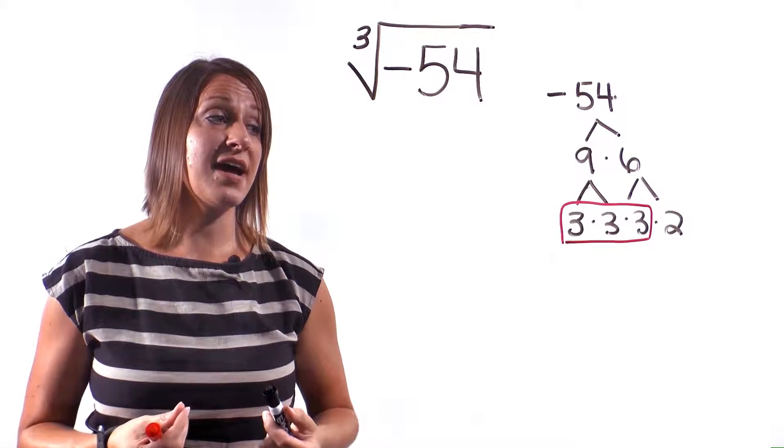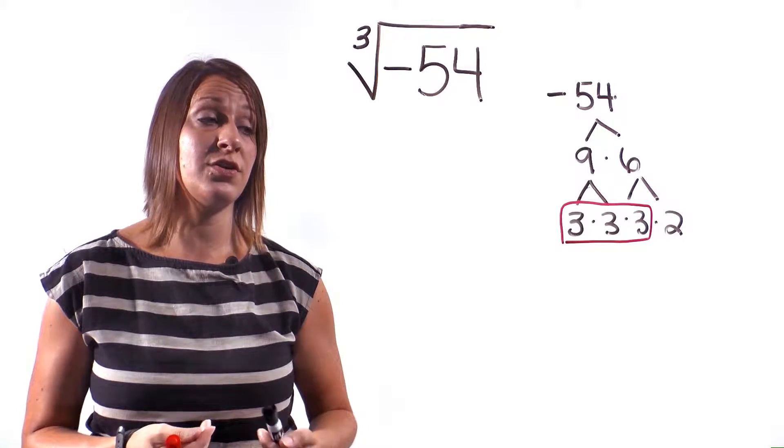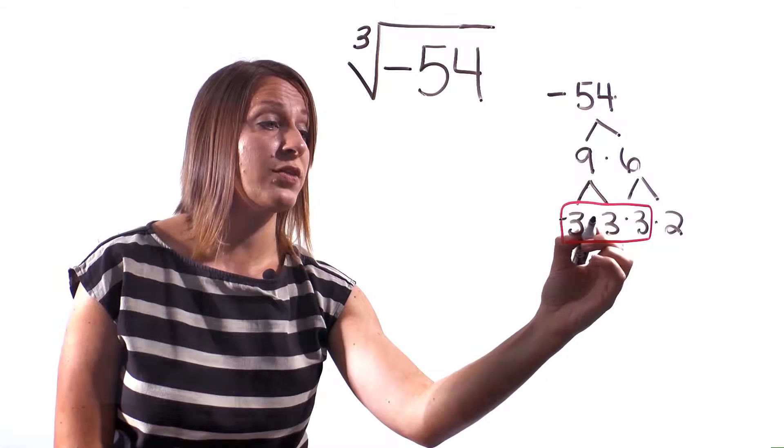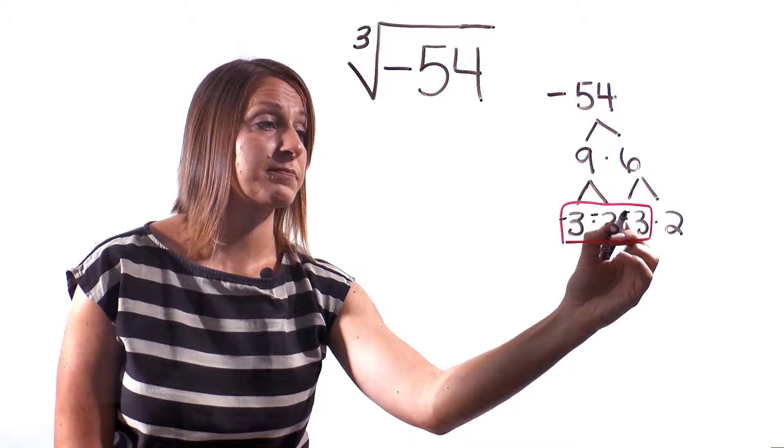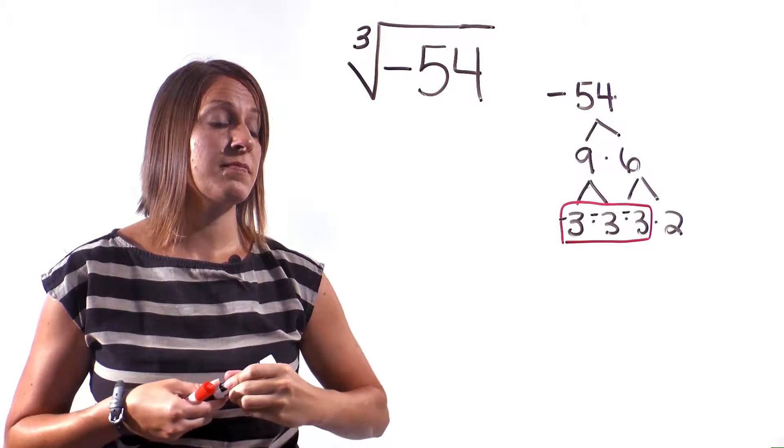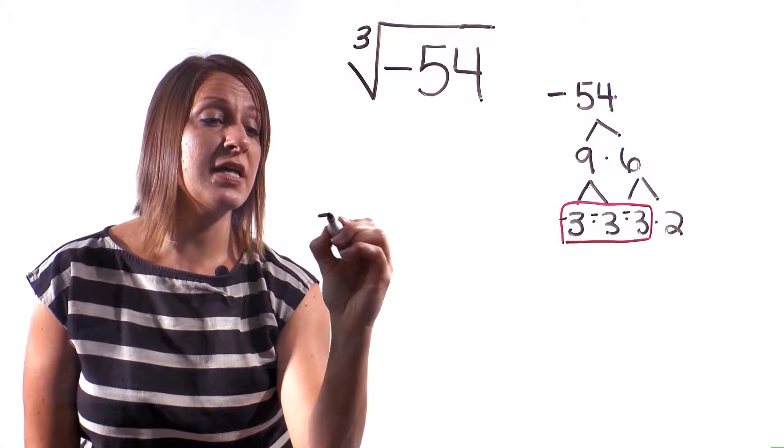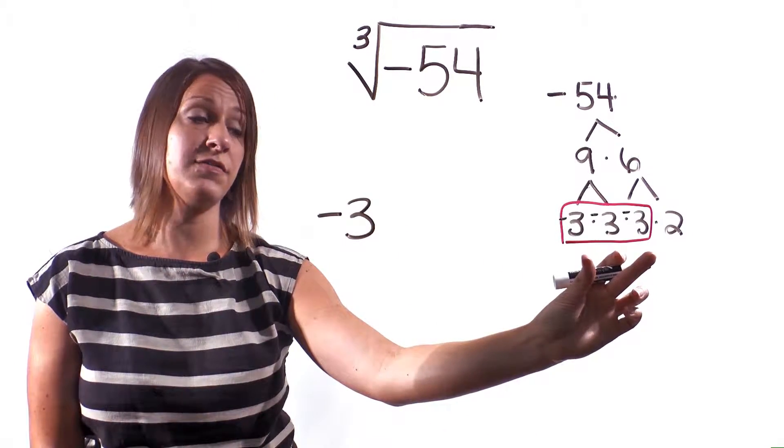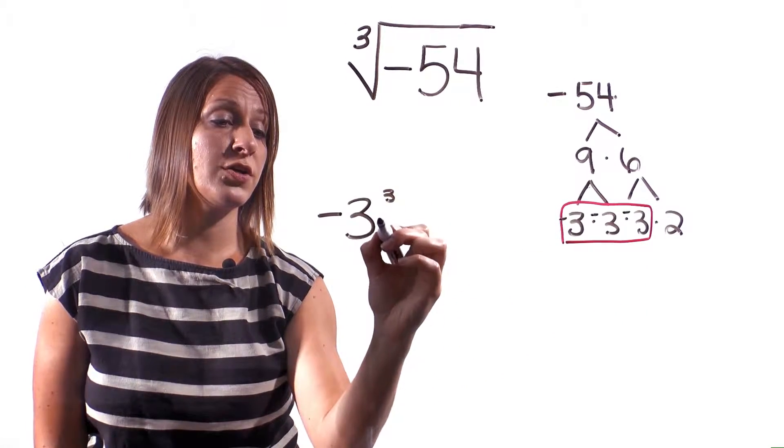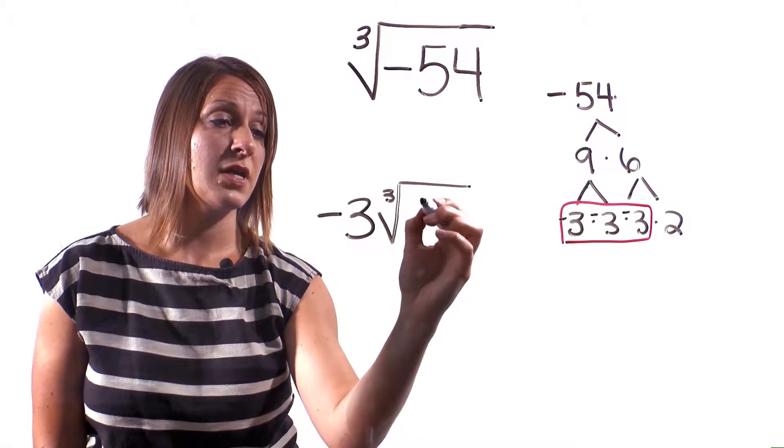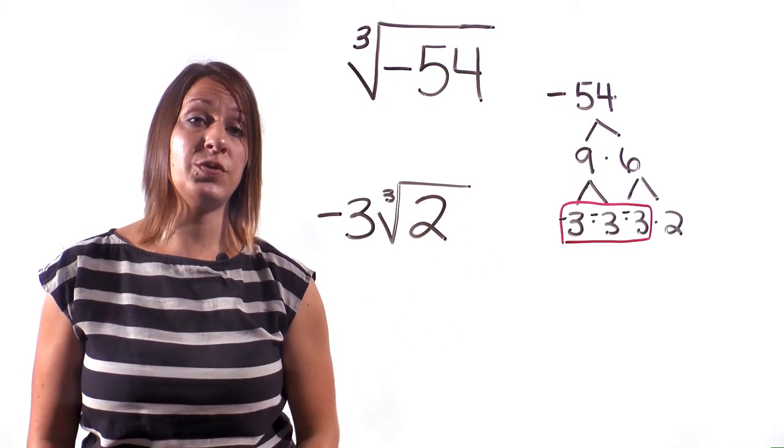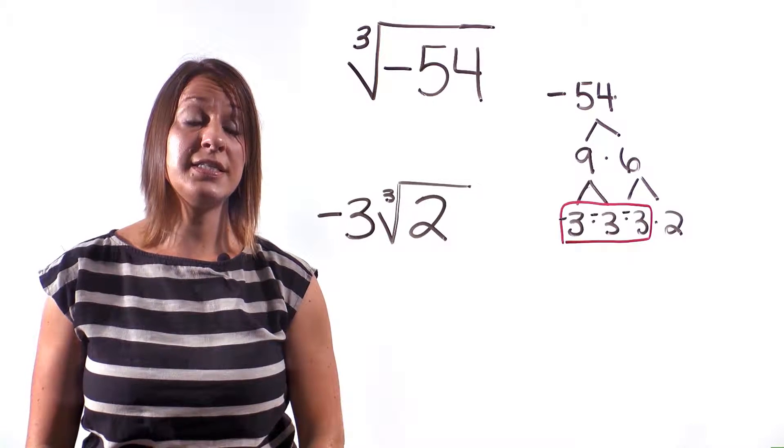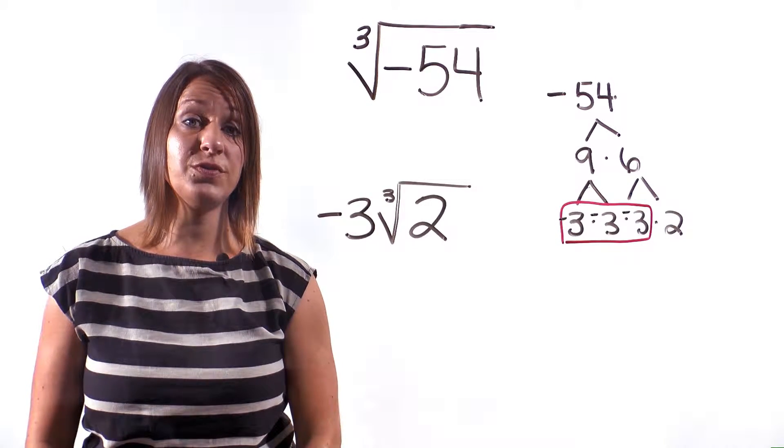But we can't have a negative 2 because that would still stay underneath the radical. So we're going to put the negative sign with the 3s. So we'll put the negative 3 on the outside, which represents our set of 3. We'll draw our cubed root. And we'll put the 2 on the inside. So the answer to this problem is negative 3 cubed root of 2.